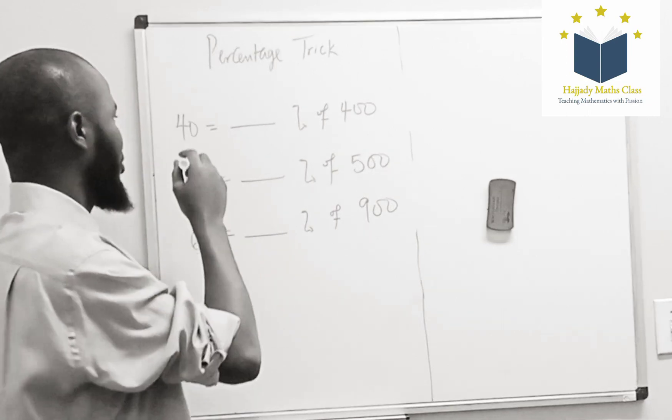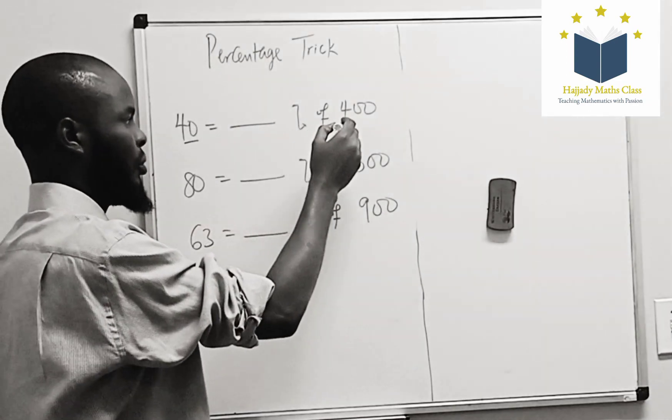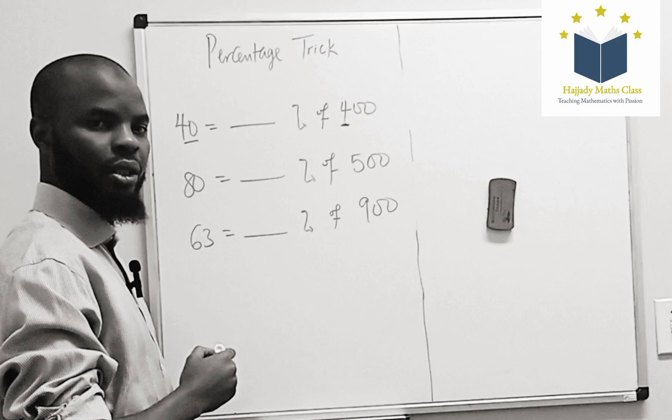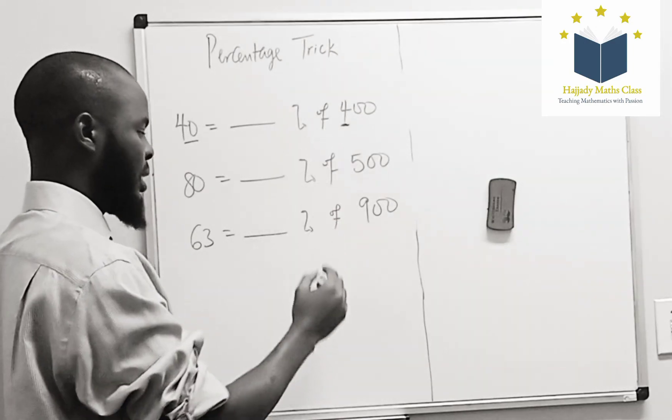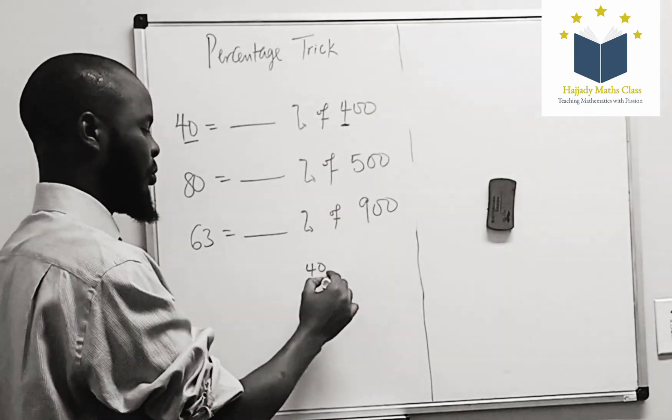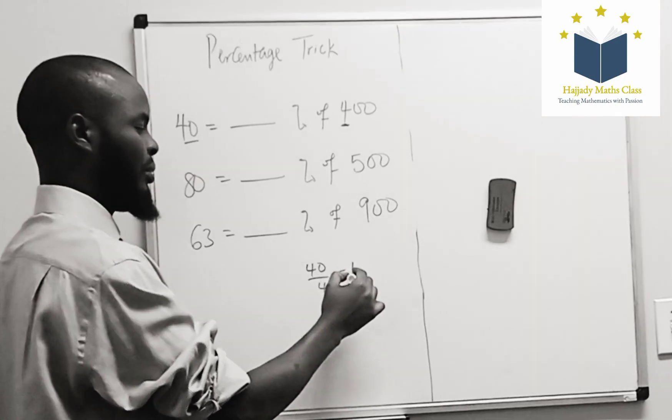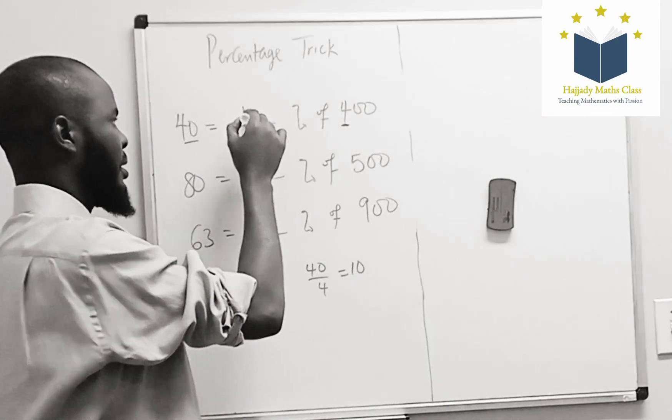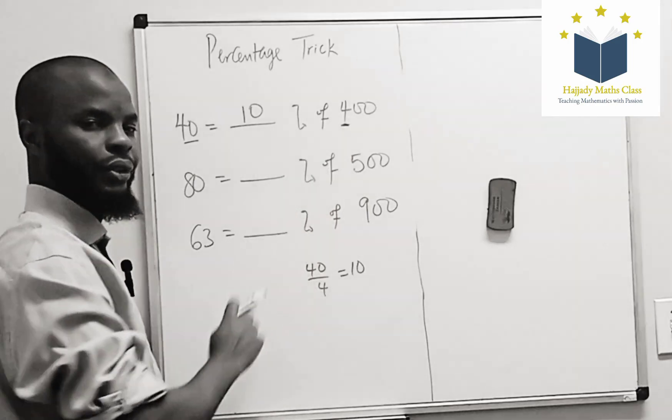Okay, here we have 40, here we have 4. Just pick the first digit. So what is 40 over 4? Here we have 10. So 40 is 10 percent of 400.